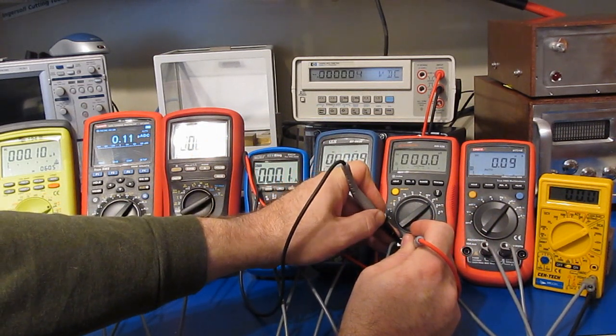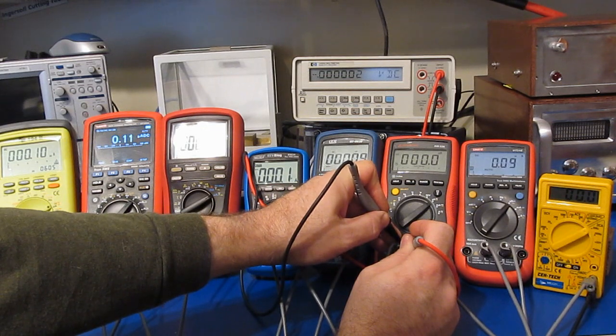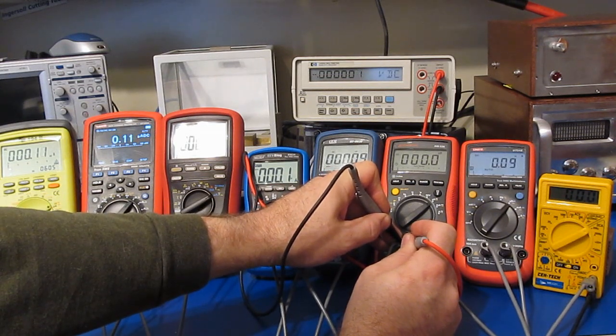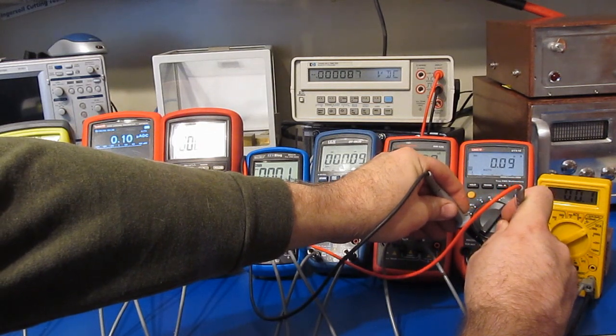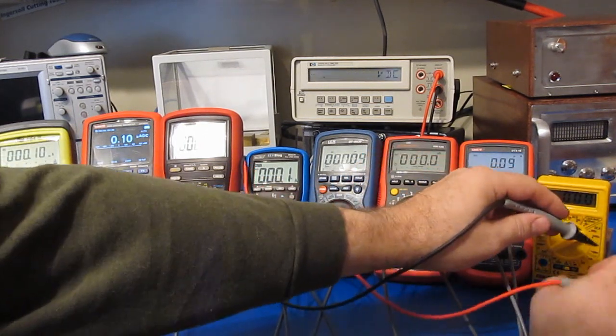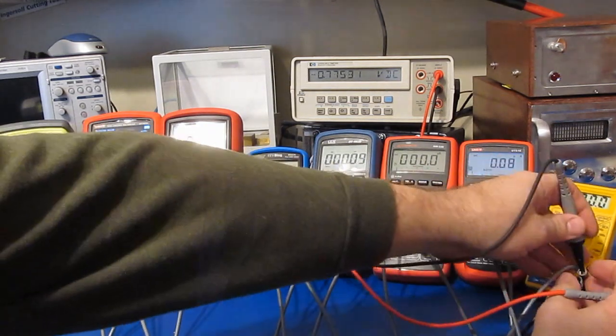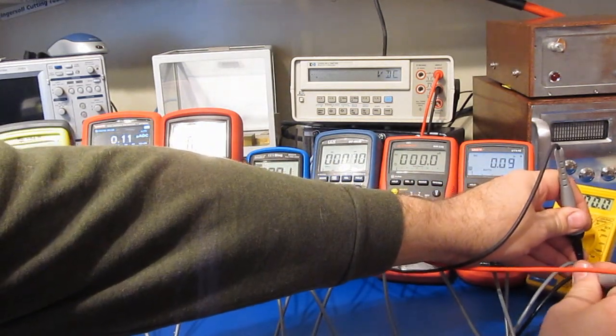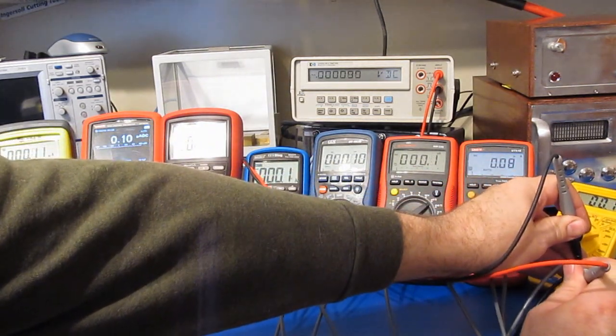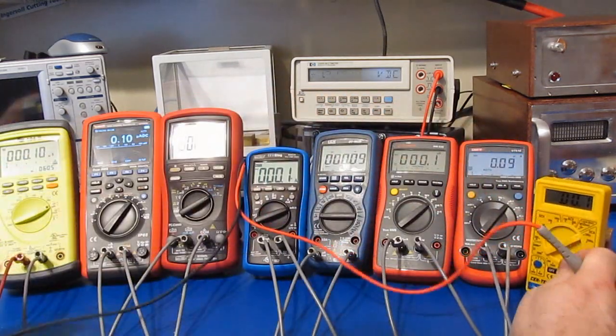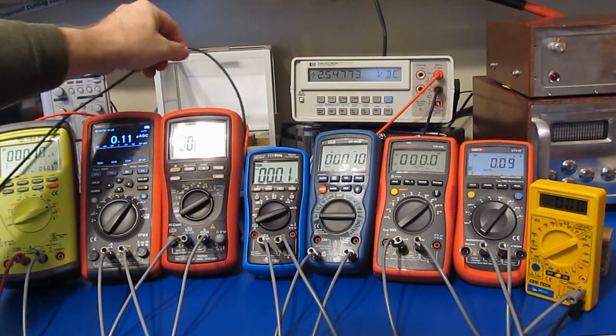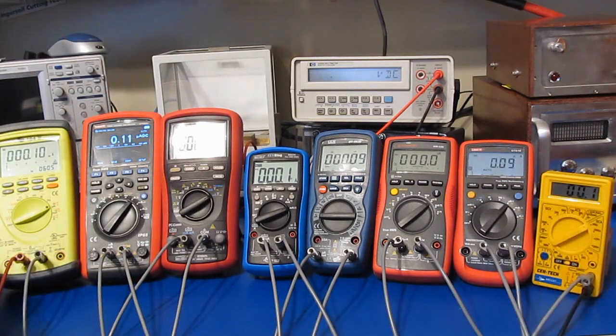And the Amprobe AM 530 looks like about 2 microvolts. Our UT61E, about 90 microvolts. And the free Harbor Freight meter looks like again about 90 microvolts.